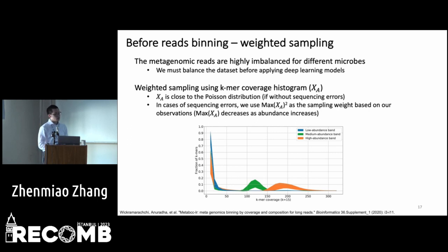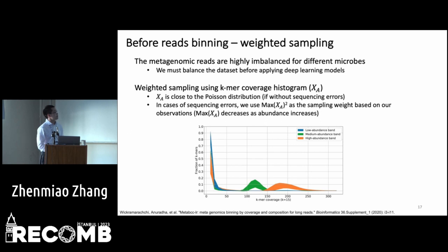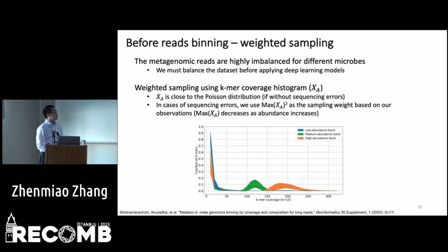Before applying read binning, there is one more step: weighted sampling. Because microbes have varying abundances, the metagenomic reads of different microbes are highly imbalanced. To use deep learning models for binning, we must balance the dataset first. We use weighted sampling with weights calculated from the k-mer coverage histogram. If there are no sequence errors, the distribution is close to a Poisson distribution, and we can estimate abundance from the k-mer coverage peak. But with sequence errors, the peak is unstable, so instead we use the square of the maximum of the histogram as the sampling weight, because the maximum value of the low-abundance bin is highest and the maximum of higher-abundance bins is lowest.